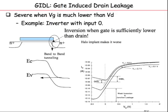Gate-induced drain leakage, or GIDL, is another complex phenomenon. When you want to shut your transistor off, you set the gate voltage to zero. But you find there is still a non-zero VDS and some leakage current. You might try to reduce the leakage further by making the gate voltage negative to pull the subthreshold curve down. Unfortunately, this can be counterproductive — making the gate voltage more negative can actually increase the total leakage current.